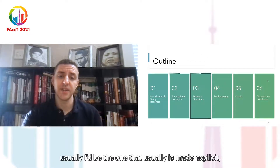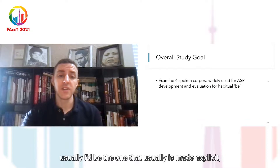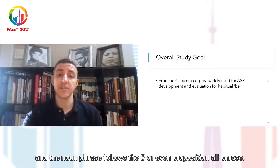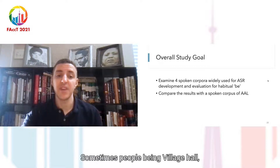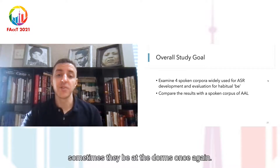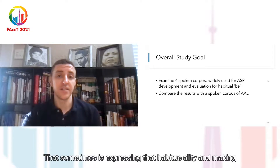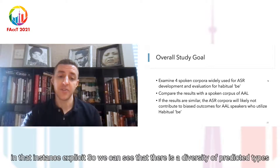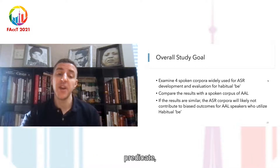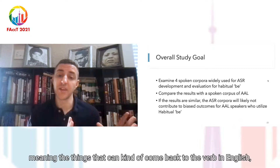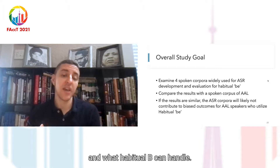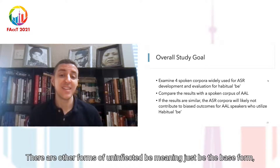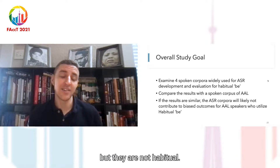Moving now to the research questions for this study. The overall study goal was to examine four spoken corpora widely used for ASR development and evaluation for habitual B, then compare the results with a spoken corpus of AAL and its contents of habitual B. If the results are similar, the ASR corpora will likely not contribute to biased outcomes for AAL speakers who utilize habitual B. But if the results are not similar, then it's likely that these ASR corpora do contribute to bias against African-American language speakers who use habitual B.